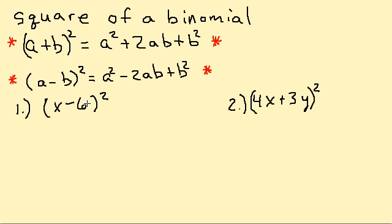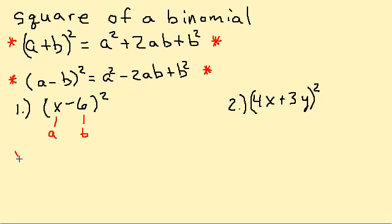Let's use the formulas to multiply (x - 6) squared. We can see that we're going to use the (a - b) squared formula. Here x is our a and 6 is our b. So using this formula, we're going to plug those in: x squared minus 2 times x times 6.